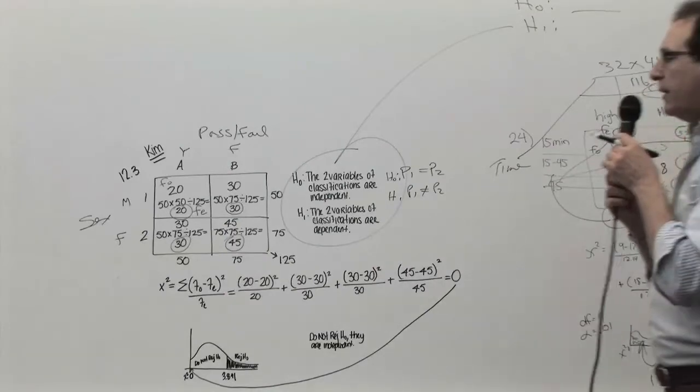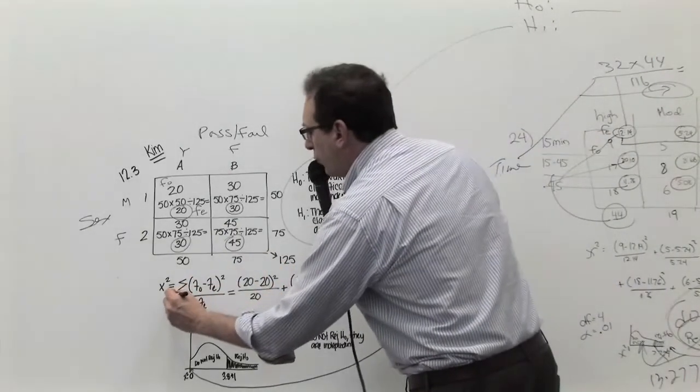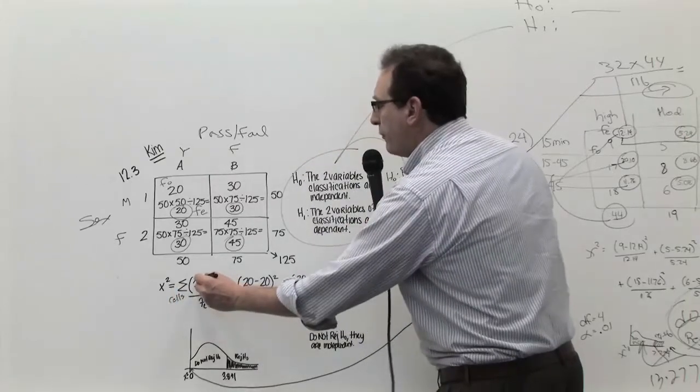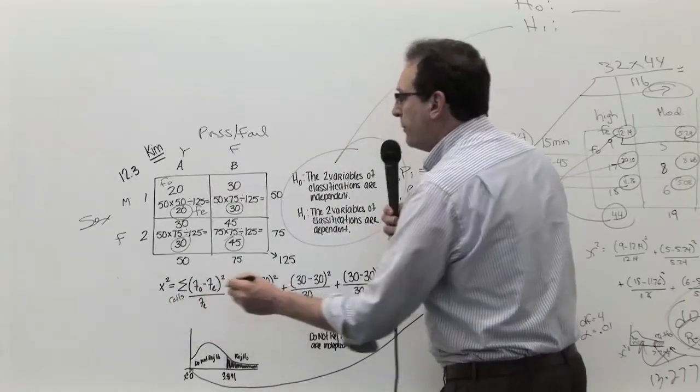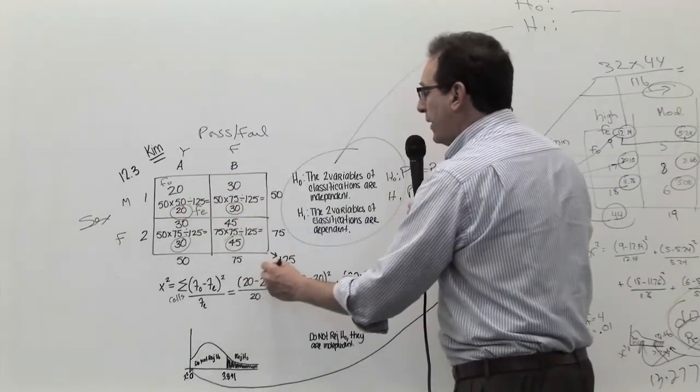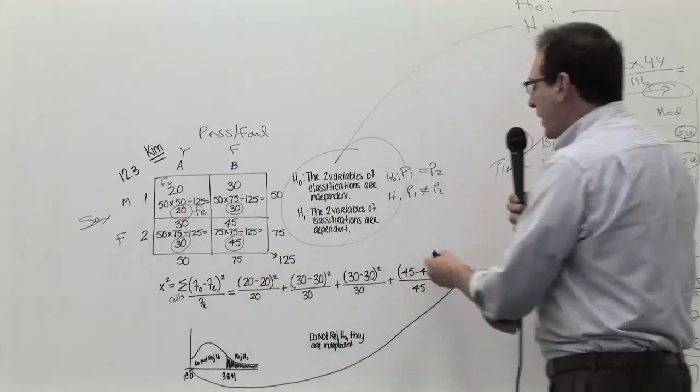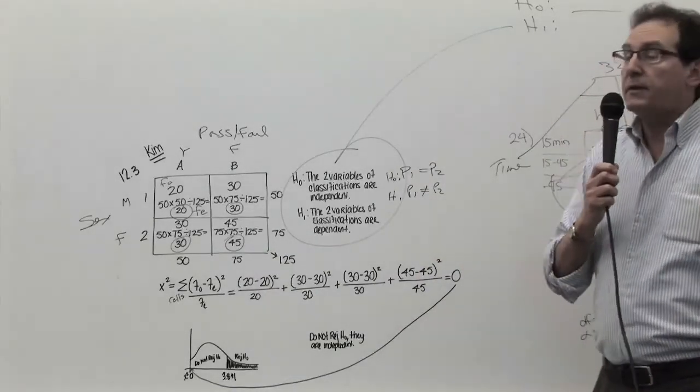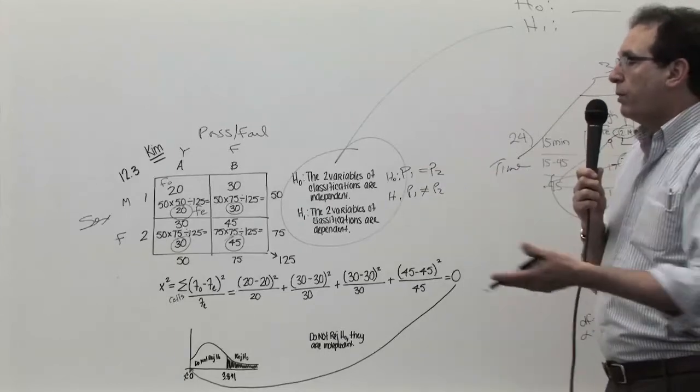The second part of the calculation, which is you total across all the possible cells, in this case there are four of them, the frequency observed minus the frequency expected squared divided by the frequency expected, so 20 minus 20 squared divided by 20 is zero. So it came out to zero, which is not, it's an unusual number, but it's not surprising in this case because the numbers are perfectly proportional.